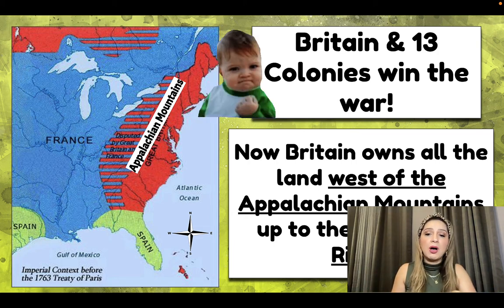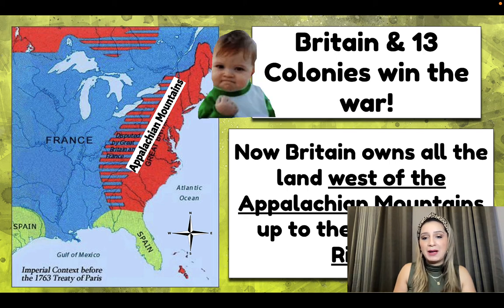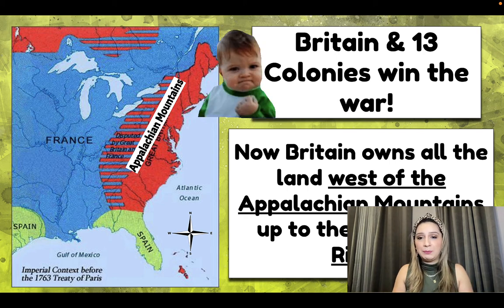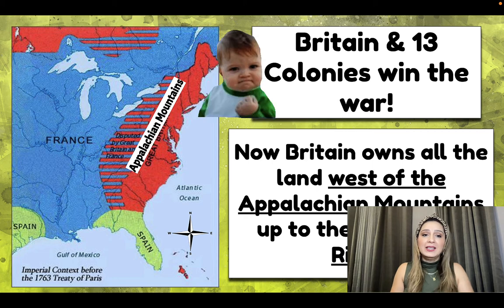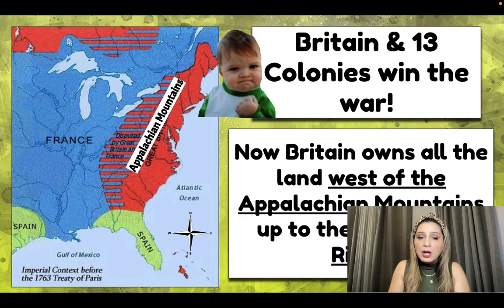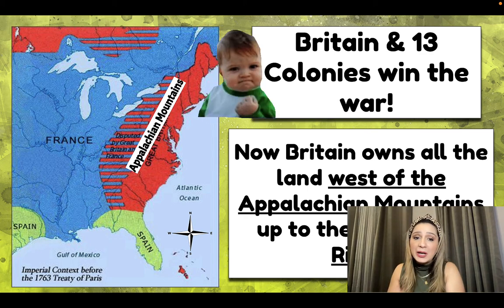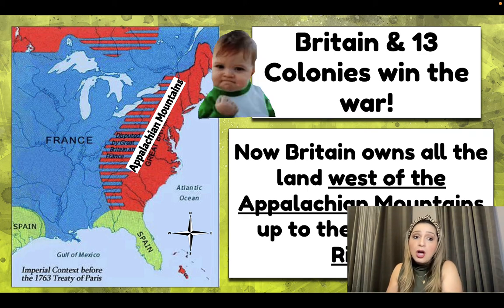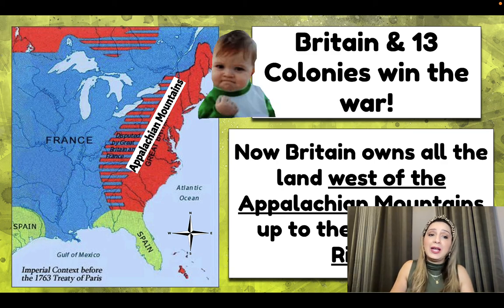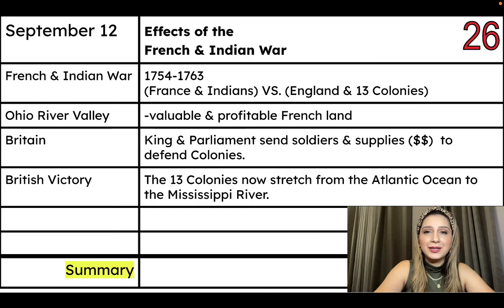Britain and the colonies win the French and Indian War. Britain wins all of the land west of the Appalachian Mountains up to the Mississippi River — this is the Ohio River Valley, later called the Northwest Territory. Now the British colonies stretch from the Atlantic Ocean all the way to the Mississippi River.